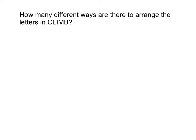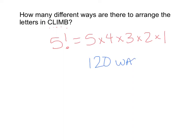How many different ways are there to arrange the letters in Klein? This is just a matter of arranging different things, so this is actually a factorial. I have five letters to arrange, so I do five factorial. Five factorial is five times four times three times two times one, or you can use your calculator and figure out that there are 120 ways to arrange the letters in Klein.